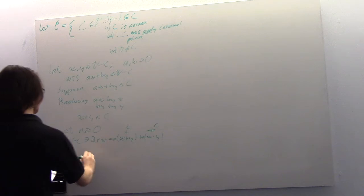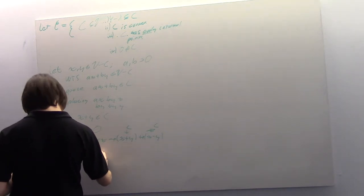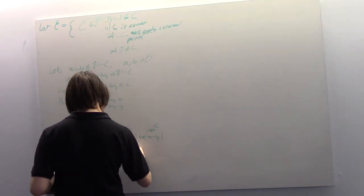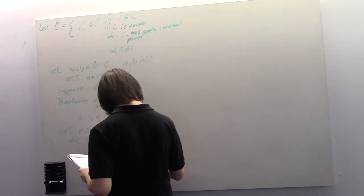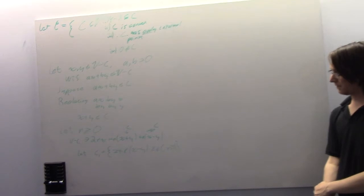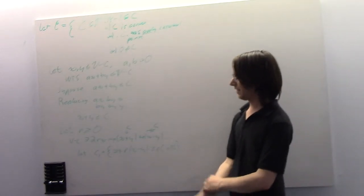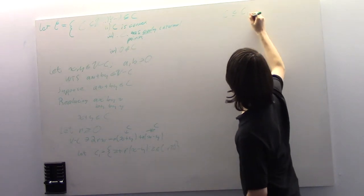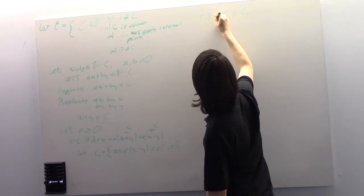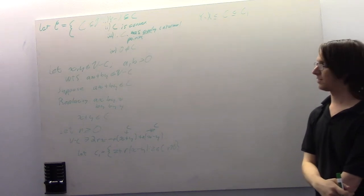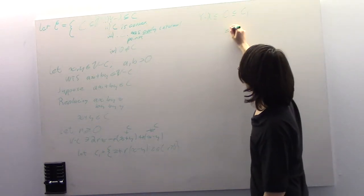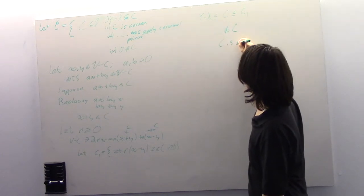Now let C1 equal the set of z plus r times (x minus y) times y, such that z is an element of C and r is greater than or equal to zero. We know C is a subset of C1. This tells us y minus x is contained in C, which is contained in C1. Zero is not an element of C by construction.